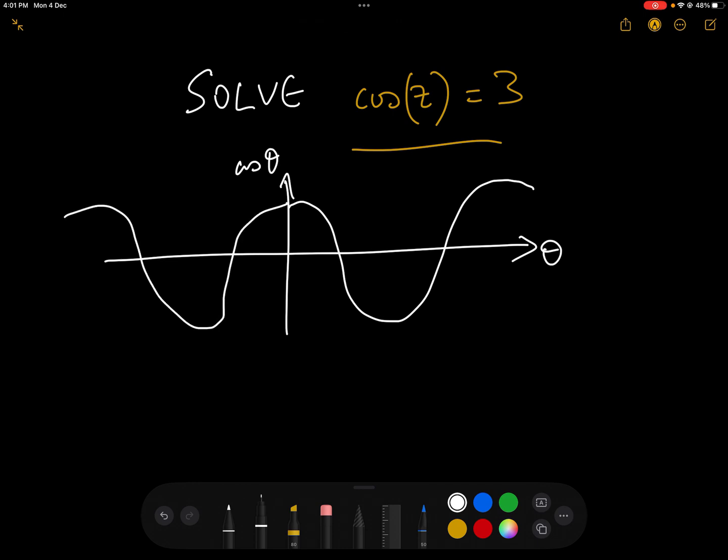where the highest value that it attains is 1 and the lowest value is -1. So you might think, well how on earth can we solve cos(z) = 3?